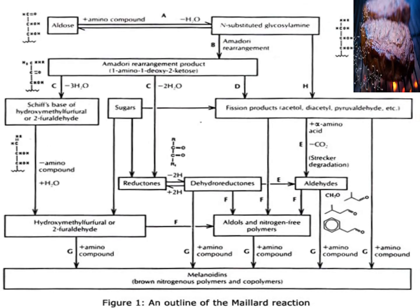The overall mechanism — the flow process of the Maillard reaction — begins with the reaction between a free amino compound and a reducing sugar. Using an aldose sugar as an example: when the amino compound reacts with the aldose sugar, the first compound formed is N-substituted glycosylamine. This intermediate, unstable product undergoes Amadori rearrangement to produce 1-amino-1-deoxy-2-ketose, another important compound from which many further reactions occur.